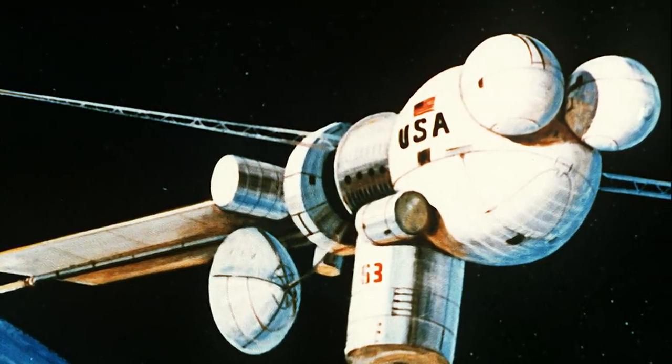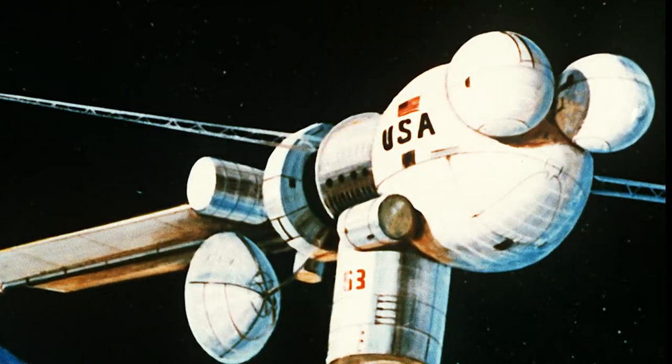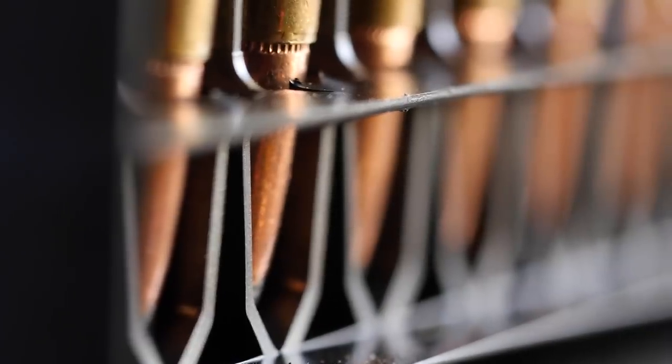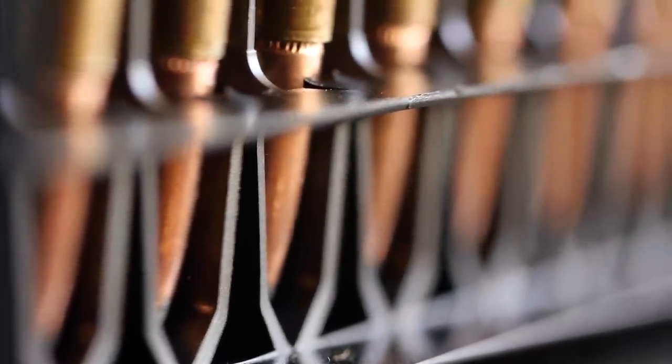One of these projects, codenamed Have Sting, proposed constructing the largest gun to ever exist in the solar system. This orbital cannon would have been a giant railgun that could shoot projectiles towards Earth at a speed of 35,000 miles per hour.